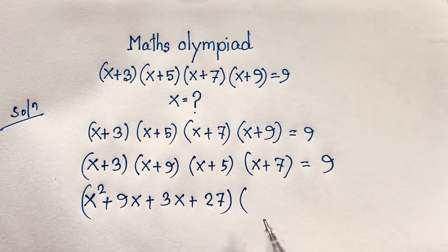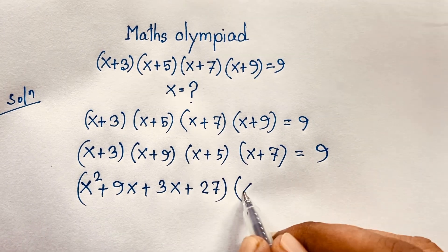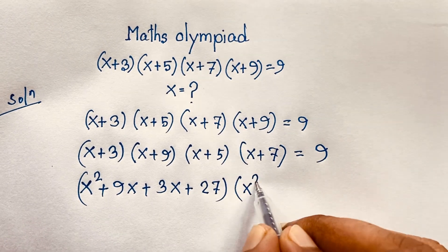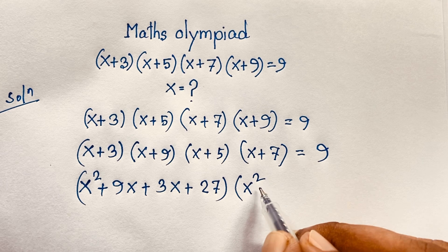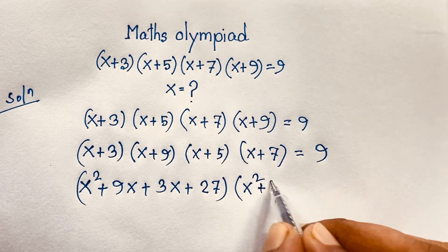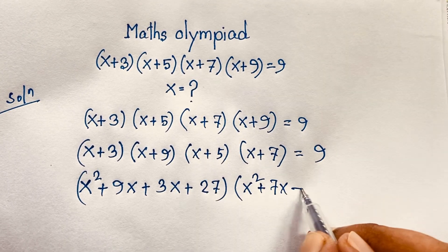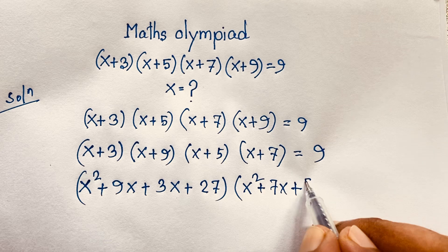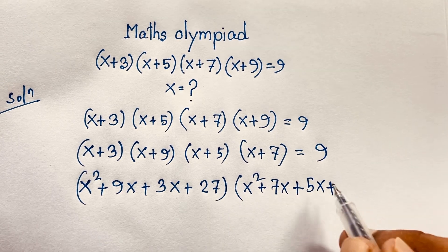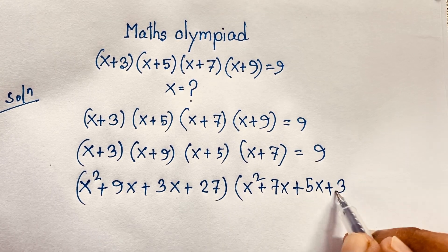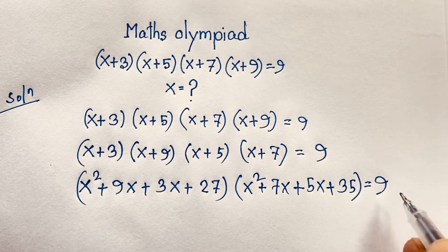Then for (x+5)(x+7): x times x gives x squared, x times 7 gives 7x, 5 times x gives 5x, and 5 times 7 gives 35. So that product is x² + 12x + 35, and this equals 9.